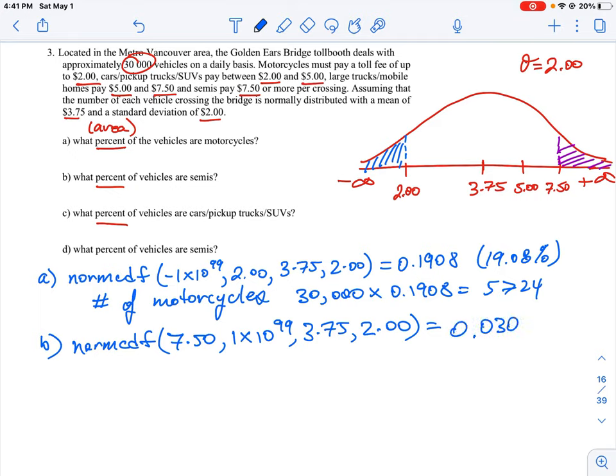Just a small amount are trucks. Again, we could calculate the number of semis, which equals the 30,000 sample multiplied by 0.0304, and that equals approximately 912 trucks that go through.